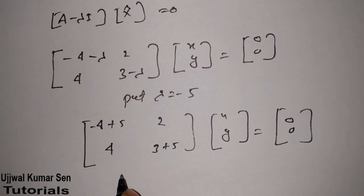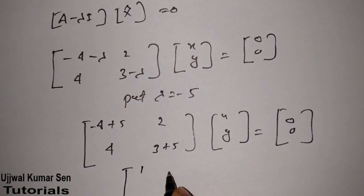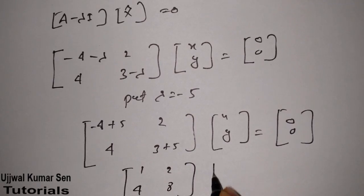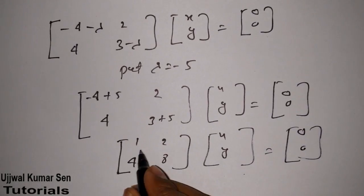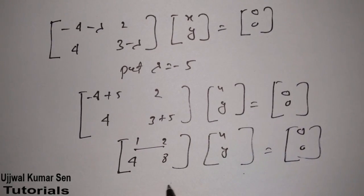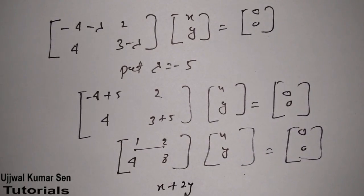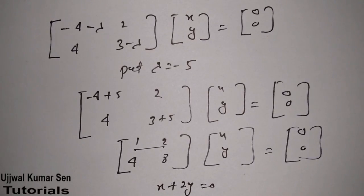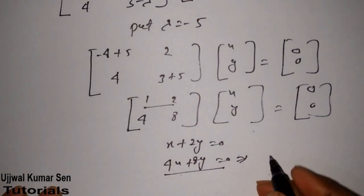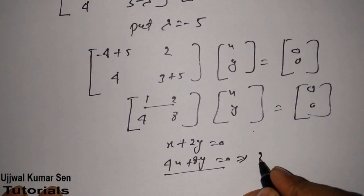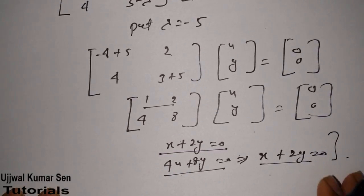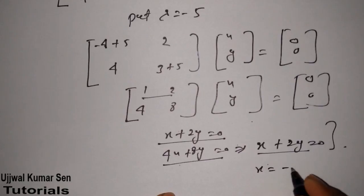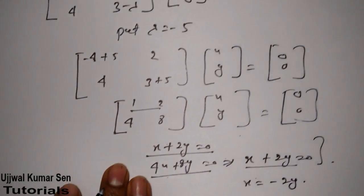Substituting lambda equals minus 5: (minus 4 plus 5) gives 1, and (3 plus 5) gives 8. So the matrix becomes [1, 2; 4, 8] times [x, y] equals [0, 0]. Multiplying out the rows: x plus 2y equals 0, and 4x plus 8y equals 0. Both equations are the same, so we get x equals minus 2y.